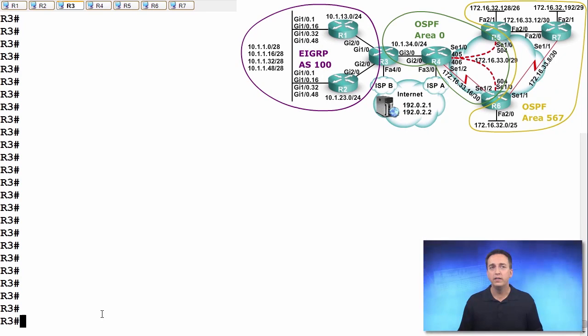So how do we modify the metric type for redistribution? Well, there's two ways we can do it. We can either attach it right to the redistribute command or we can specify it in a route map.